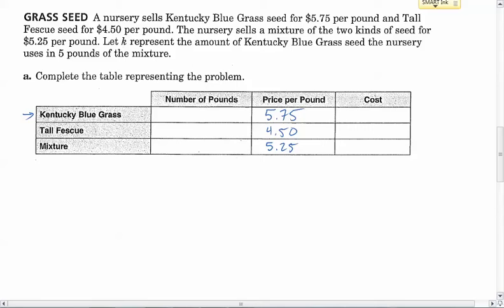The nursery sells a mixture of the two kinds of seed for $5.25 per pound. Now, just looking at these, is $5.25 closer to $4.50 or closer to $5.75? Hopefully you recognize it was closer to Kentucky bluegrass, the $5.75. Since it's closer to that, we should have more of the Kentucky bluegrass in our mixture. K is going to represent the amount of Kentucky bluegrass.